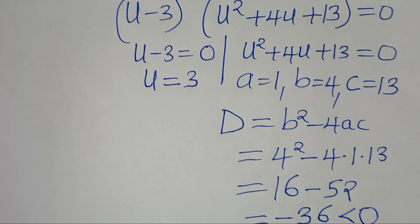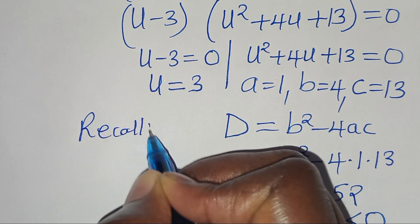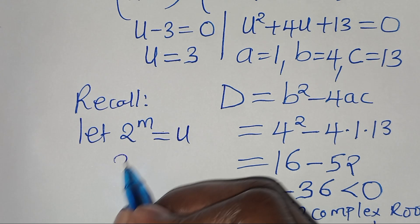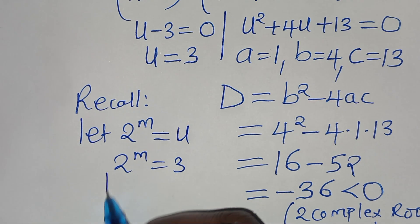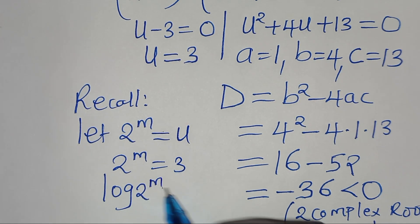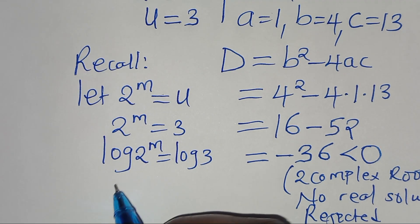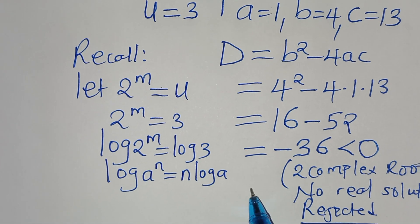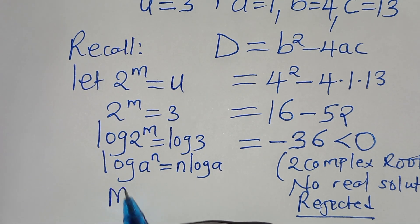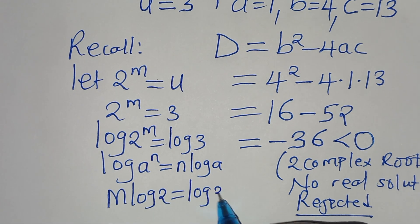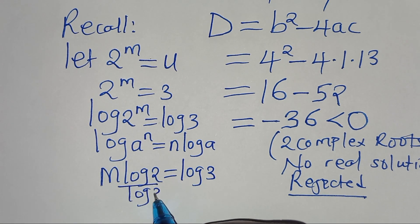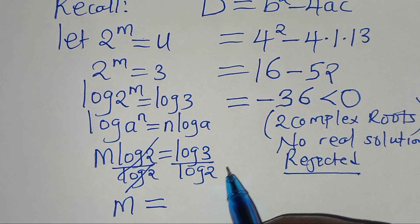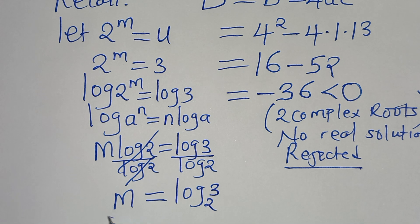We proceed with u equal to 3. Recalling that 2 to the power of m equals u, we have 2 to the power of m equals 3. To solve for m, we take the logarithm of both sides. Applying the power rule, log(2^m) = m·log 2, which equals log 3. Dividing both sides by log 2, we get m equals log 3 over log 2, which we can express as log base 2 of 3.